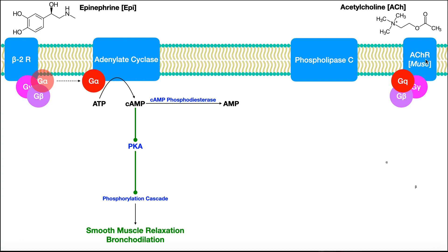This is also a G-protein coupled receptor. You can see the G-protein complex here. Essentially when acetylcholine binds to that receptor, that activating subunit is going to translocate over to this enzyme — phospholipase C — and activate it. Situated in the plasma membrane is a phospholipid called PIP2, also called phosphatidyl inositol bisphosphate, which is a normal constituent of plasma membranes.